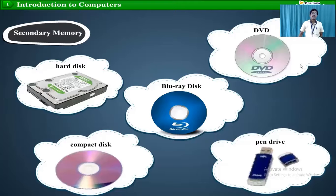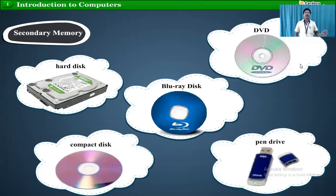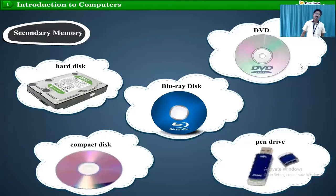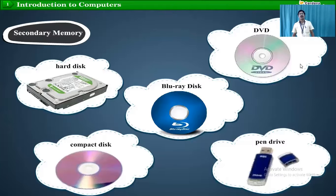In RAM, data comes from the hard disk. When the power goes off, that data vanishes. Once you start your computer again and double-click on a movie, that movie will come back into the RAM, then it will execute and display on the screen. That is how secondary memory works in contrast to RAM.